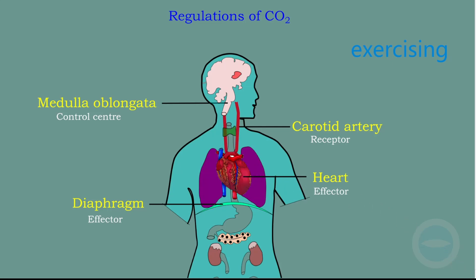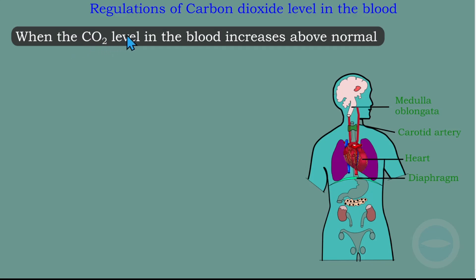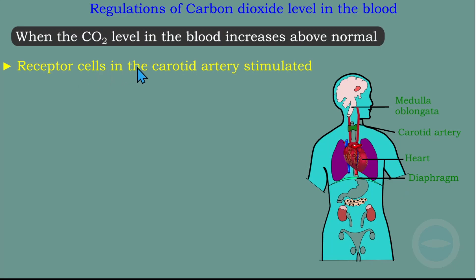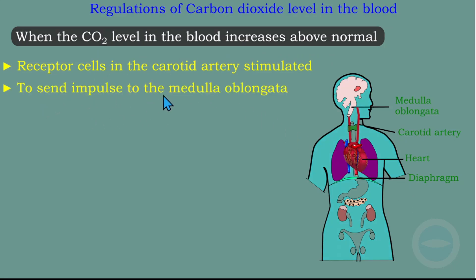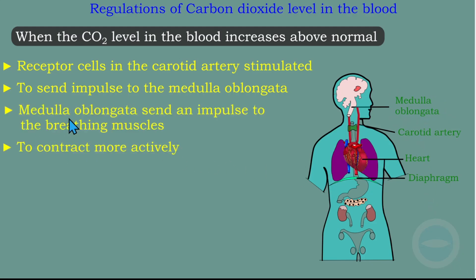Let me explain the process in a simple way. When the carbon dioxide level in the blood increases above normal, the receptor cells in the carotid artery are stimulated. The receptor cells are the chemoreceptors. They are stimulated because the carbon dioxide level in the blood is increasing and the blood is becoming more acidic. The receptors send an impulse to the medulla oblongata, communicating that the blood is becoming more acidic and there is more carbon dioxide in the blood. The medulla oblongata then sends an impulse to the breathing muscles to contract more actively.